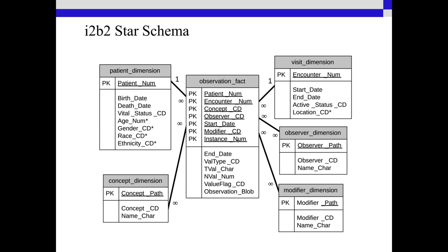The instance number is used when a record needs to be updated — for example, if a lab report had to be corrected, you'd have two records in the observation fact with instance numbers 1 and 2. Because all these fields are in the primary key, you need the instance number. For a numeric lab test value, you'd have the nval in here. In the patient dimension table, the primary key is the patient number, giving you one patient to many observation facts, with other data like birthday, death date, and marital status.